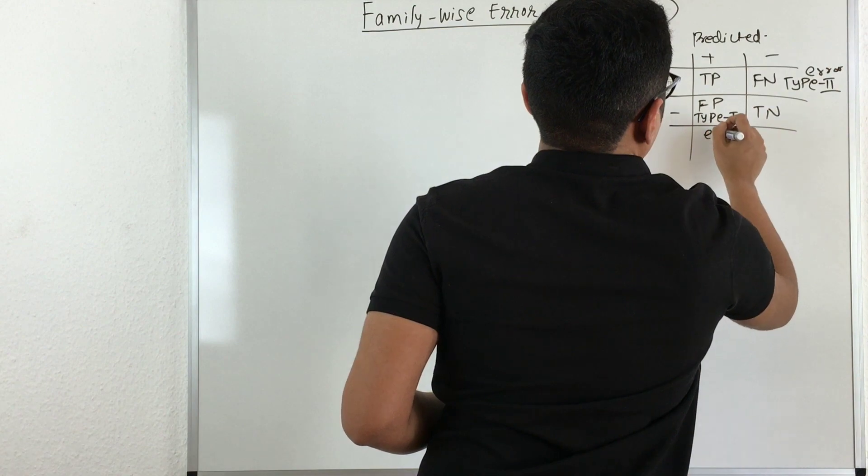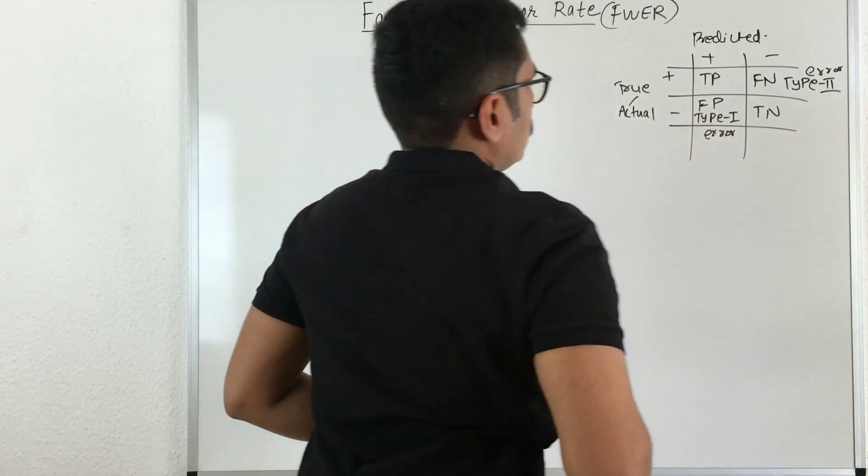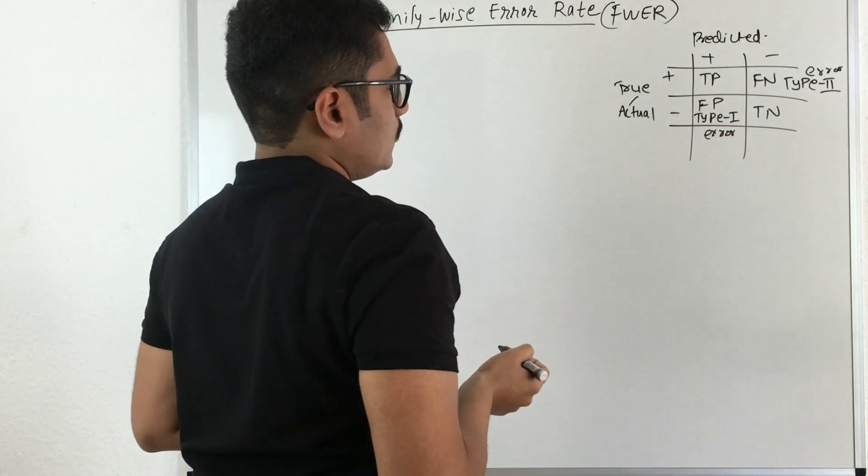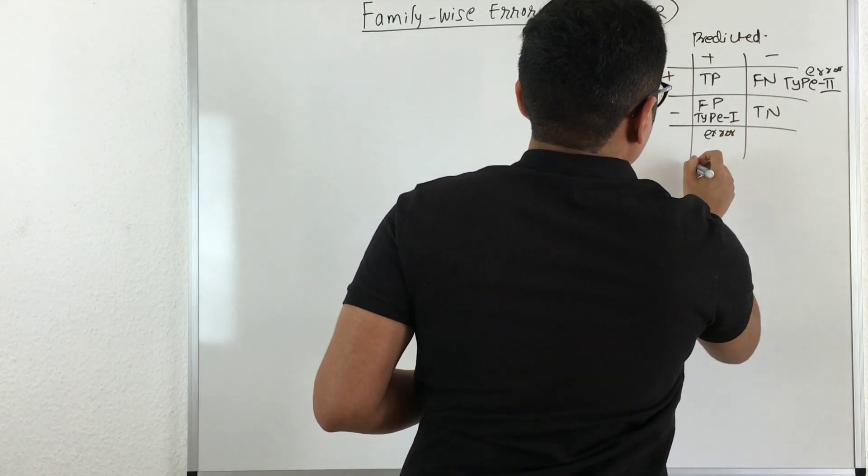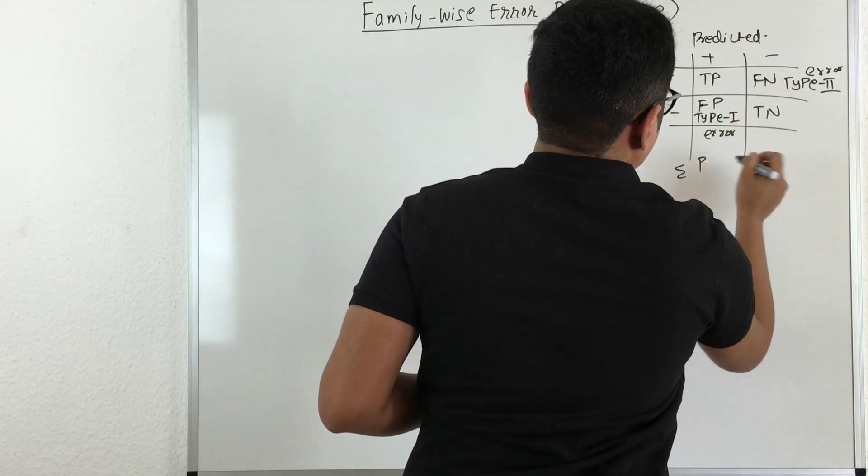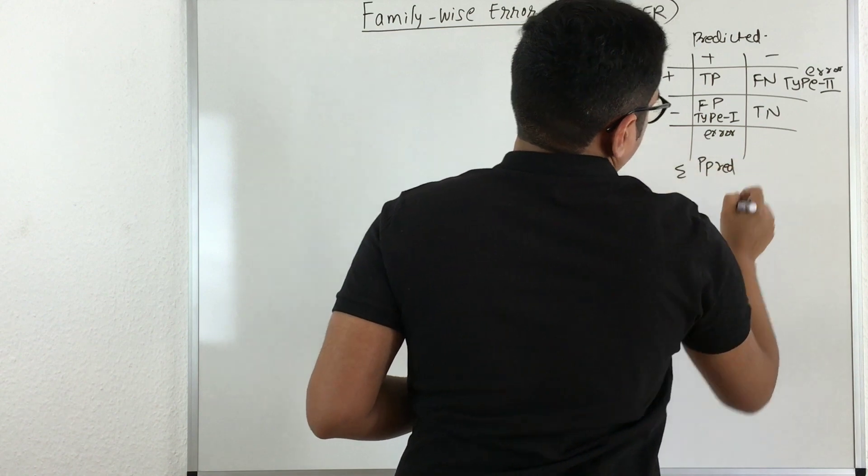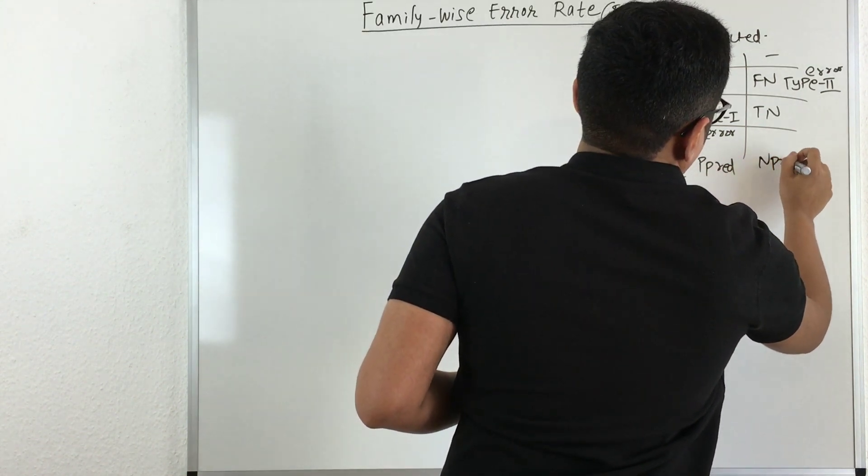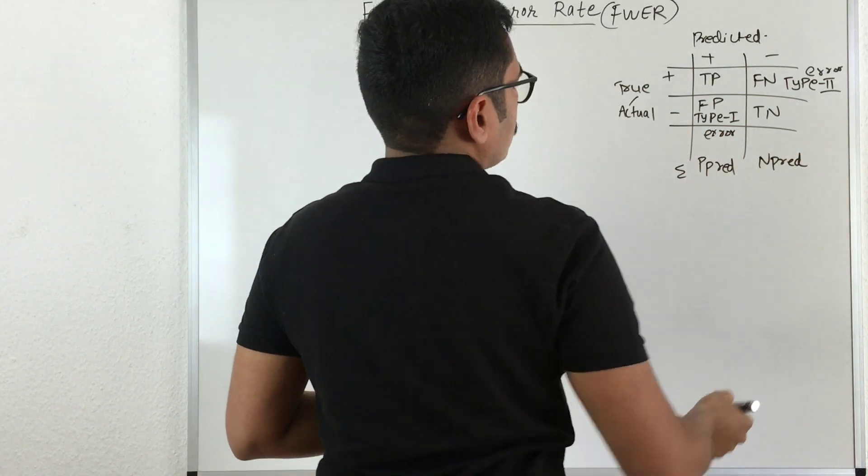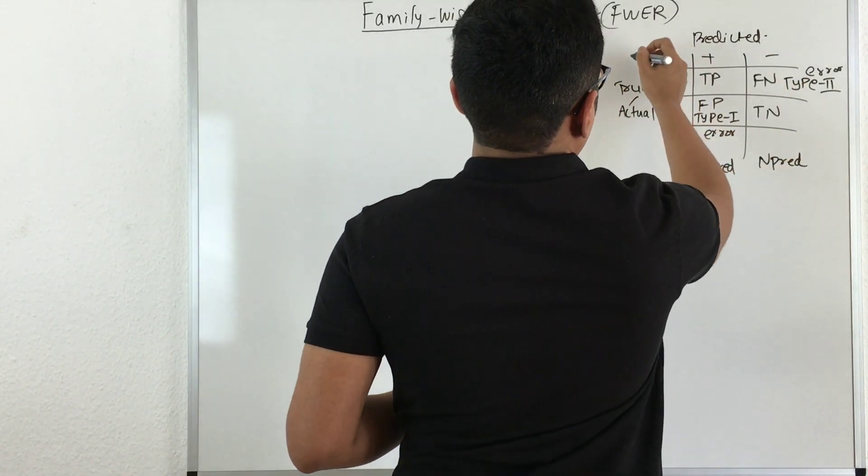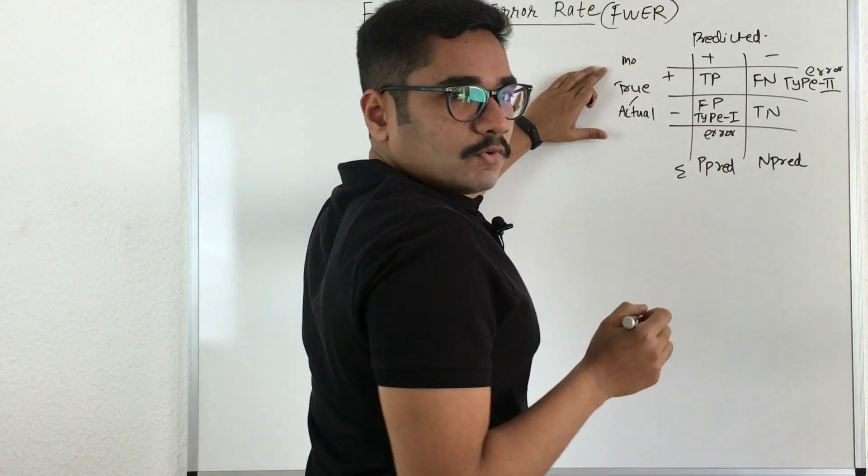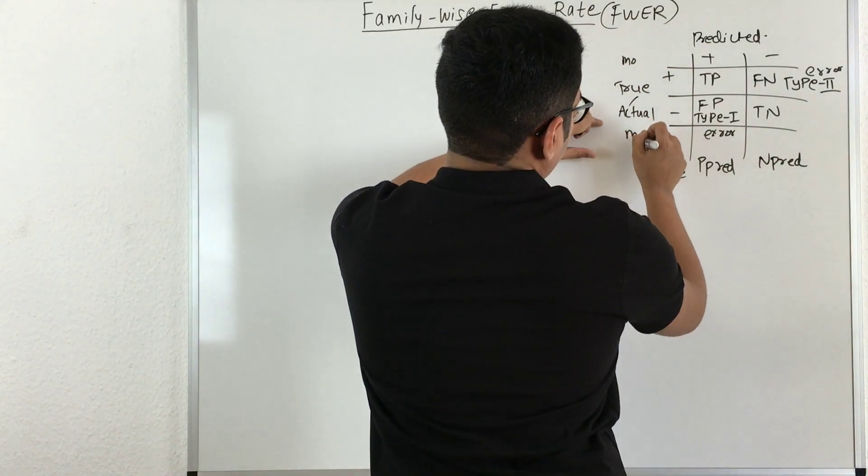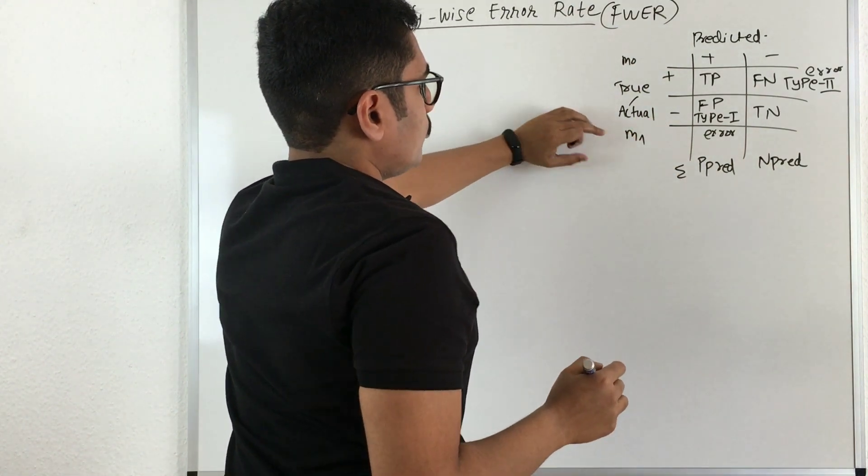So these are two error classes which you can have in statistics, and this total gives you some positive prediction, so I will write it as P_pred, and this will give you some negative prediction, that is N_pred. And the total of this, say you have M0, that is total number of positives, and here you have M1, that is total number of negatives.